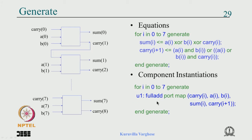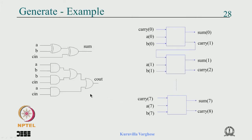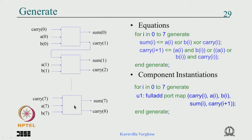For component instantiation you write an entity and architecture to implement the full adder, then write a top-level code with the full adder component declared. Define a signal carry of 9 bits, then do component instantiation through a generate loop: for i in 0 to 7 generate, label: full_add port map (carry(i), a(i), b(i), sum(i), carry(i+1)). In the 0th iteration it is carry0, a0, b0, sum0, carry1.